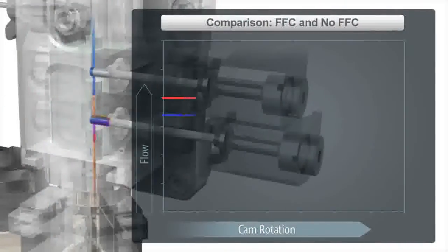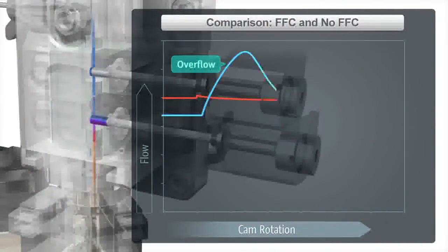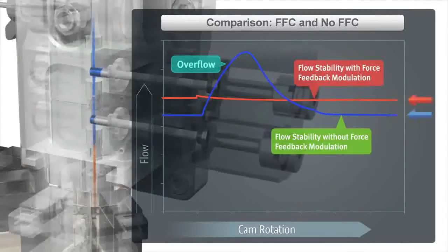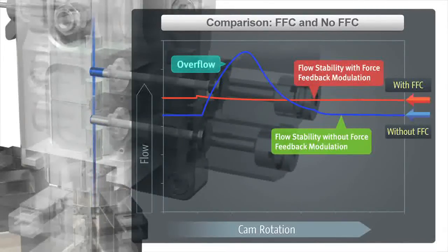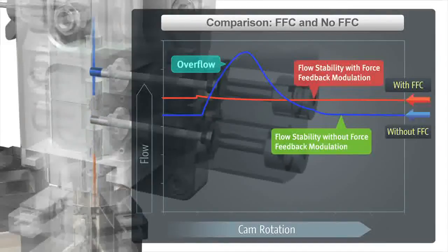These real-time measurements of force by the sensors are fed back to the motor to modulate the speed of the cam and avoid the overflow that can result from the two pistons delivering mobile phase at the same time when only one of them is supposed to.